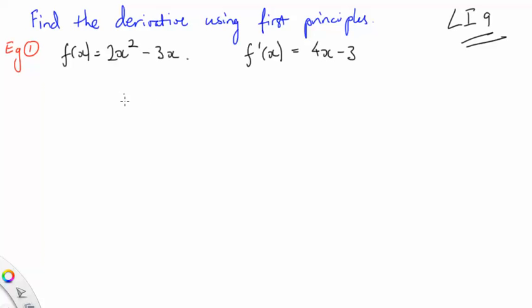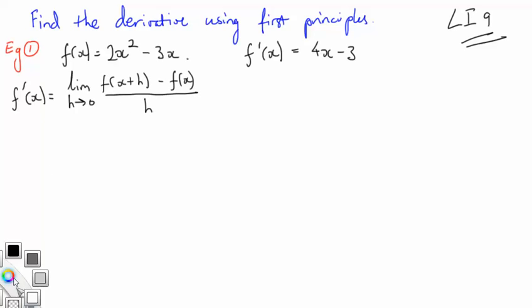So if we do that whole process correctly, we should get 4x minus 3. First step, write the formula. f'(x) equals the limit as h approaches 0 of f(x+h) minus f(x), all divided by h. You must know that formula.